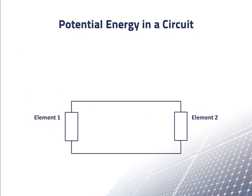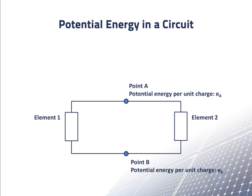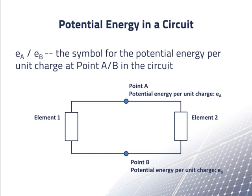Let's look at two points in this circuit, point A and point B, located on the conductors between element 1 and element 2. We are interested in the potential energy per positive Coulomb of charge at point A and point B. We'll call the potential energy per positive Coulomb at point A, E sub A, and E sub B will be the potential energy per positive Coulomb at point B.